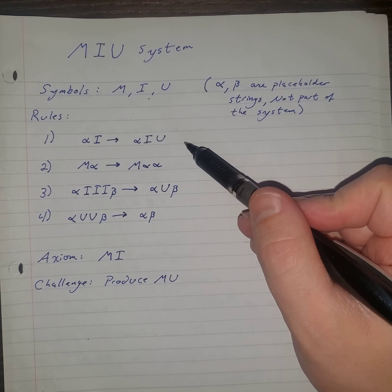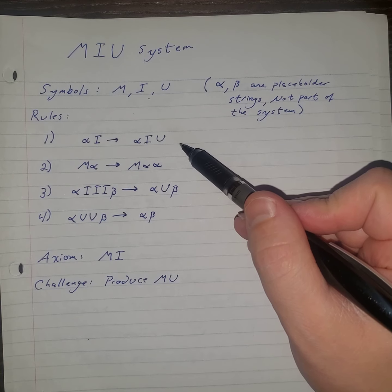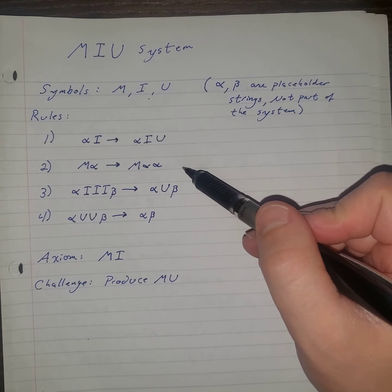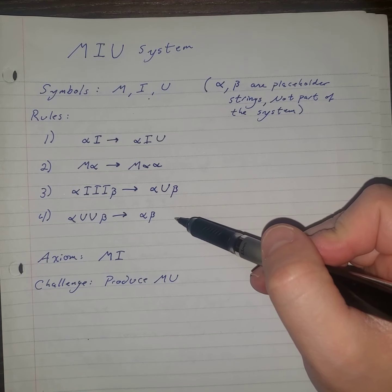Hofstadter gives us four rules of inference. First, from alpha I, we may infer alpha IU. Second, from M alpha, we may infer M alpha alpha. Third, from alpha III beta, we may infer alpha U beta. Fourth, from alpha UU beta, we may infer alpha beta.